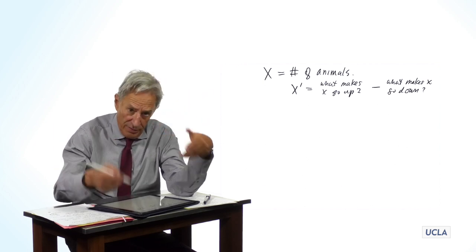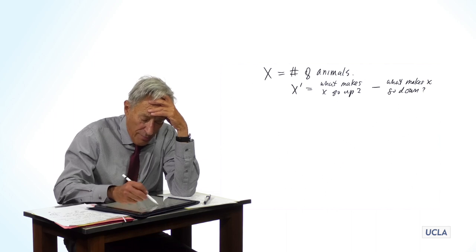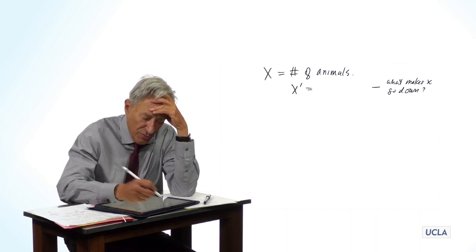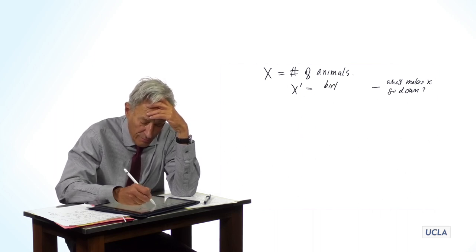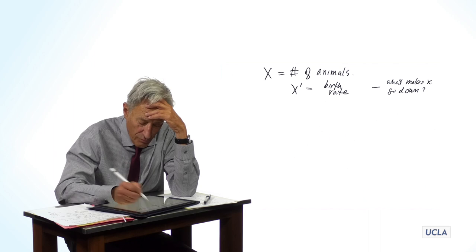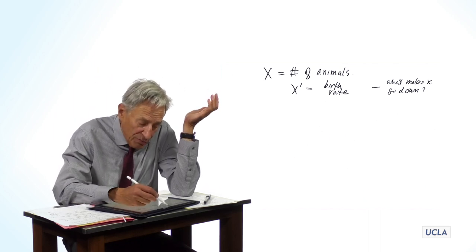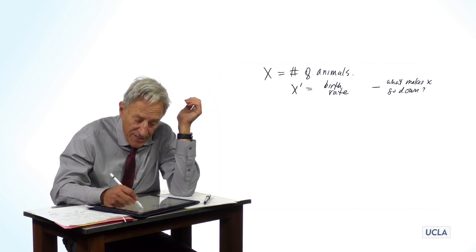So let's do some modeling. What makes X go up? We're going to assume is a birth rate. What makes X go down? We're going to assume it's a death rate.